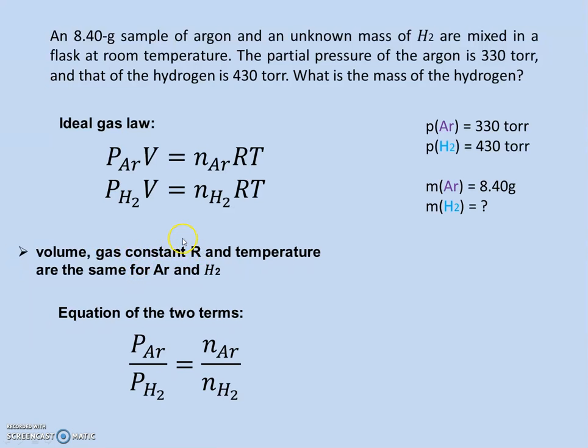gas constant R is the same as well, and the temperature, because they're both in our flask at room temperature. So we can put the two equations together and we'll see that the pressure of argon divided